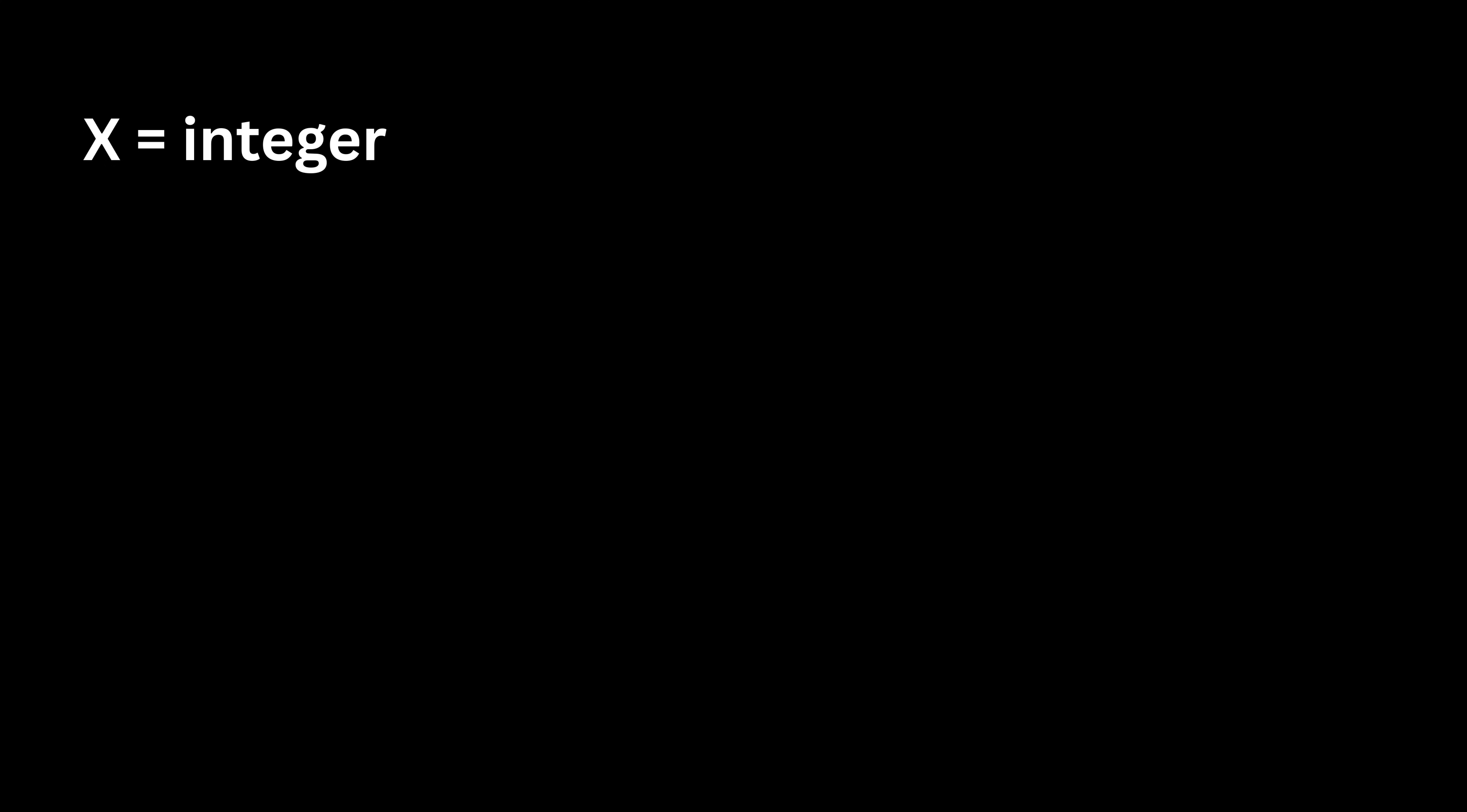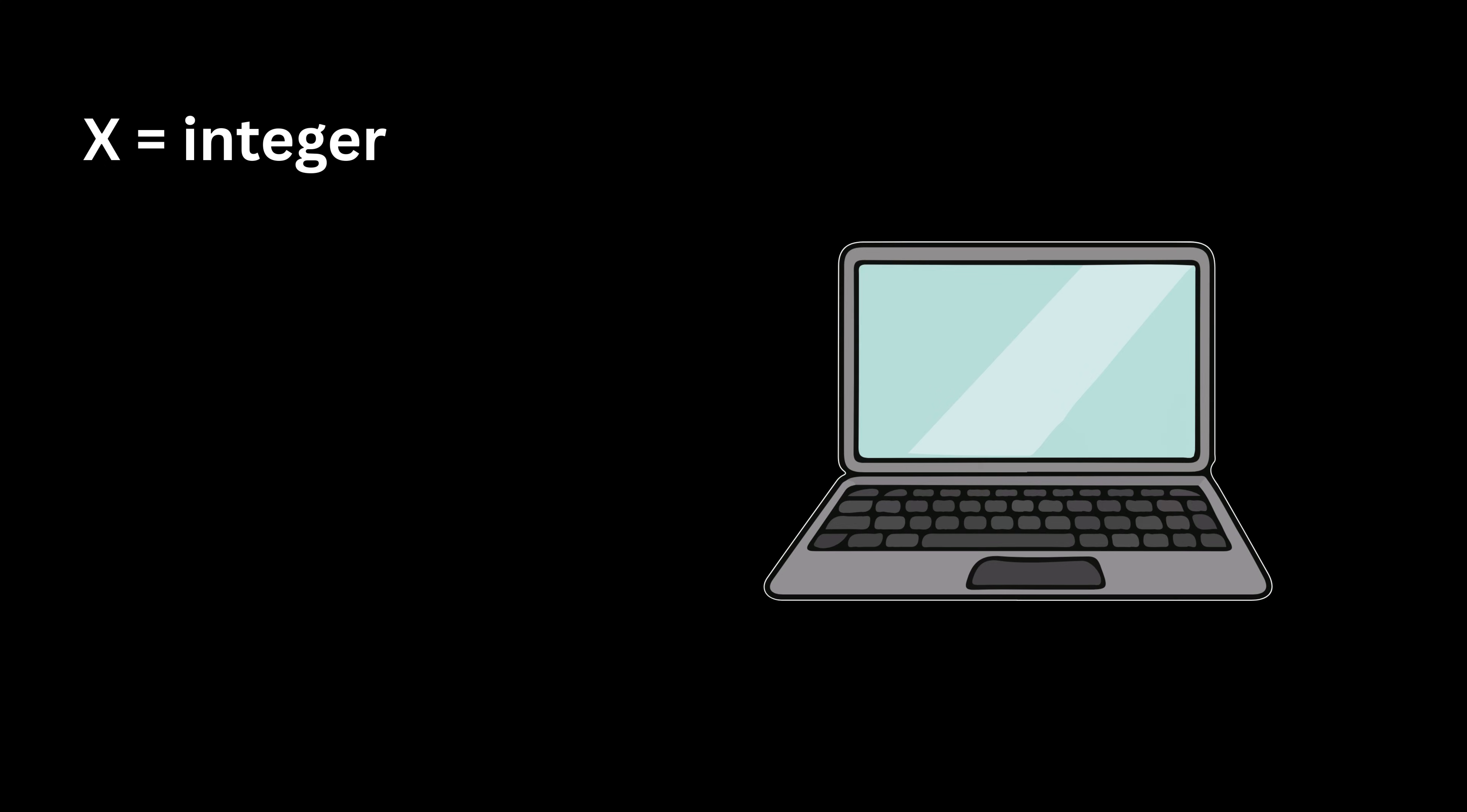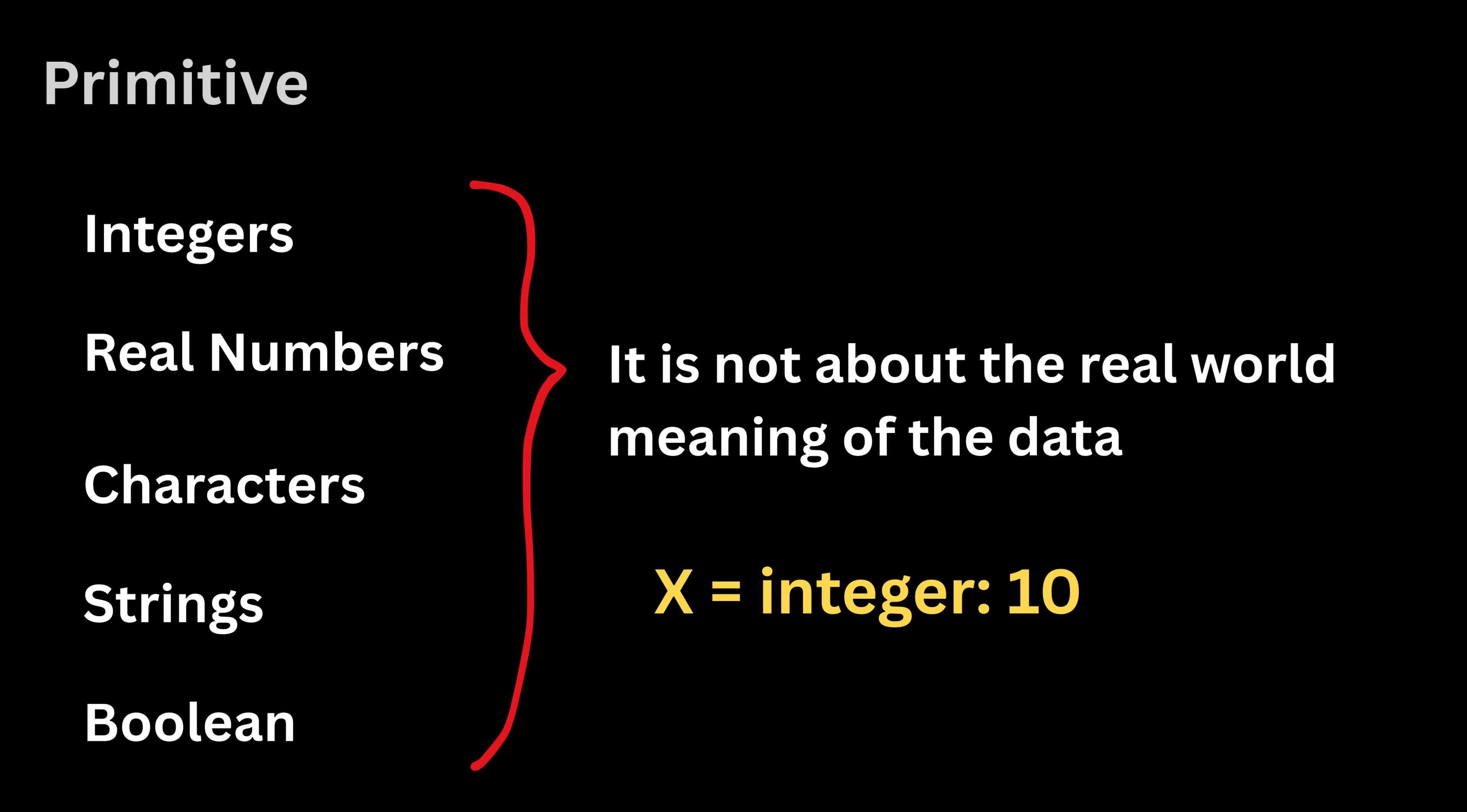When we declare a variable like X as an integer number, the computer already knows that X plus 2 is valid, but X joined with world is not valid for this data type. It is important to note that the data type is not about the real-world meaning of the data. For example, the integer 10 might represent age, marks, or distance, but the data type only cares that it is an integer.